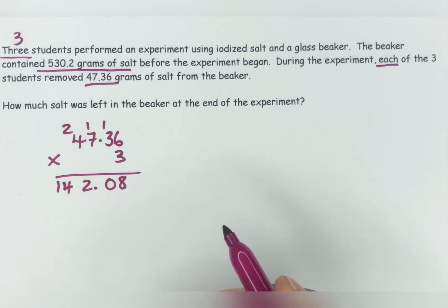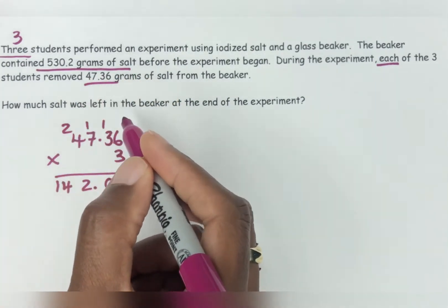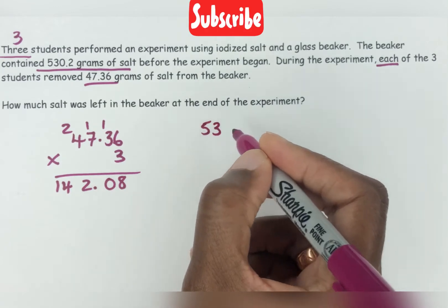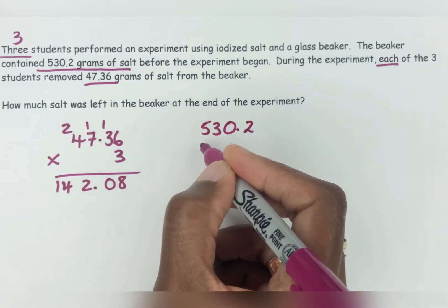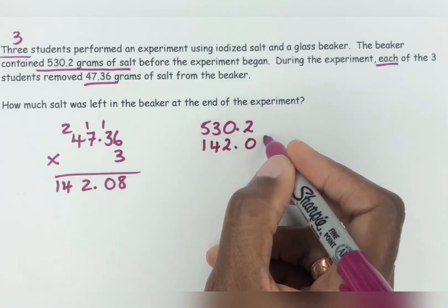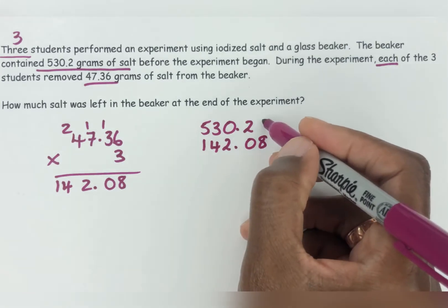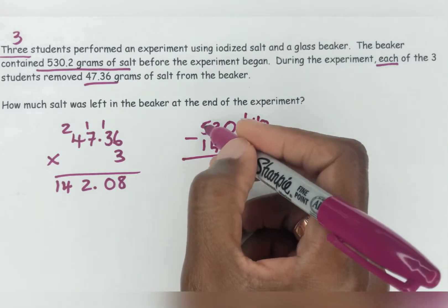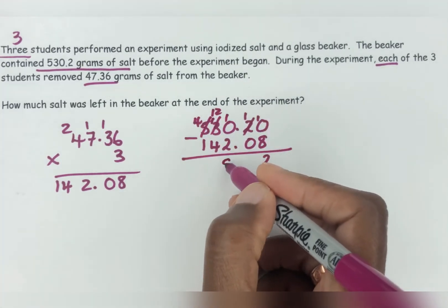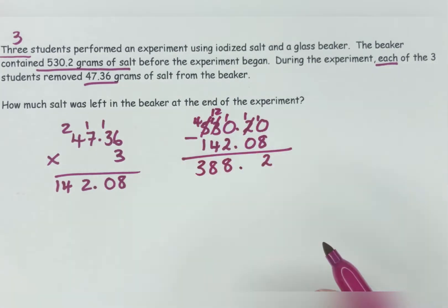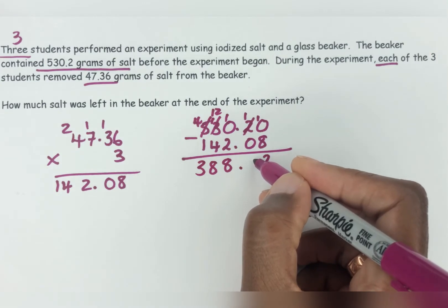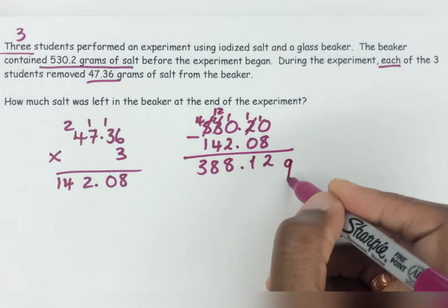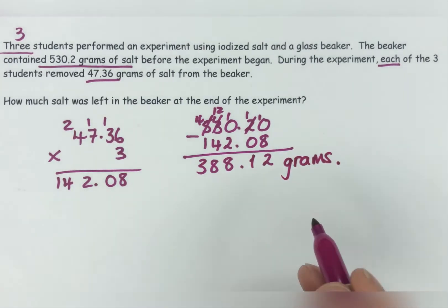So 142.08 is the total grams of salt removed by all three students. Now we're going to take that away from the total that was in the beaker — 530.2 minus 142.08. Because there's nothing in the hundredths place for 530.2, you give it a zero value just to balance everything out, so you can subtract. Working through the borrowing, we get 388.12 grams, which is what was left in the beaker at the end of the experiment.